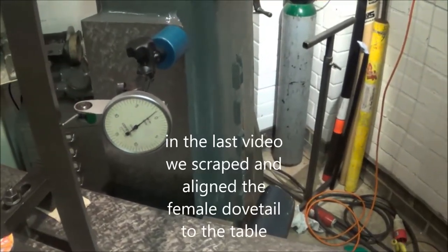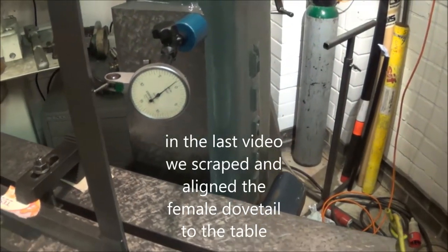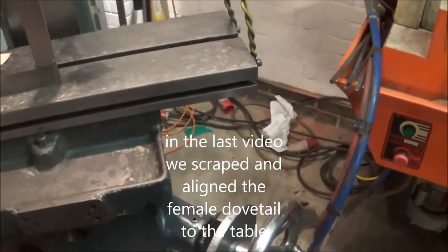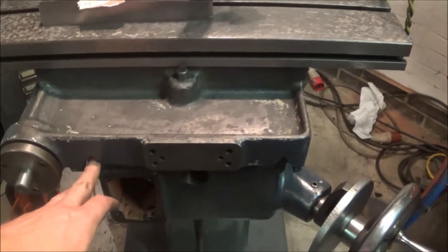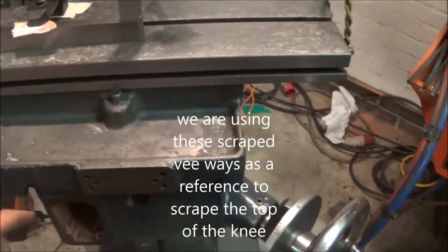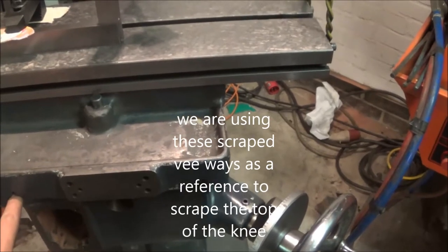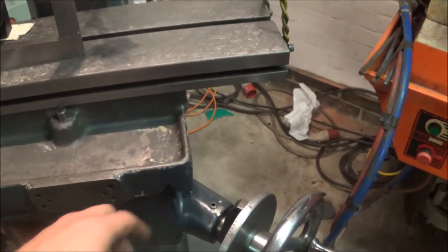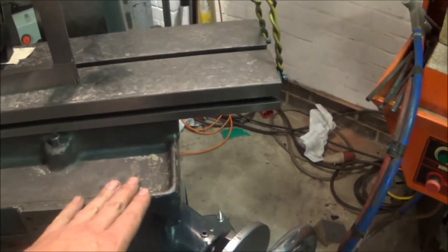So I've just run the table up and down and we've got about a thou over four or five inches, and that basically indicates that this V-way here, or the male part of this V-way, is lower than this V-way, so we need to take a bit off this side.